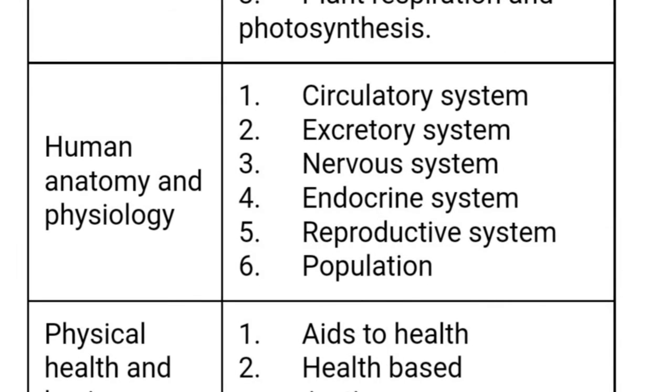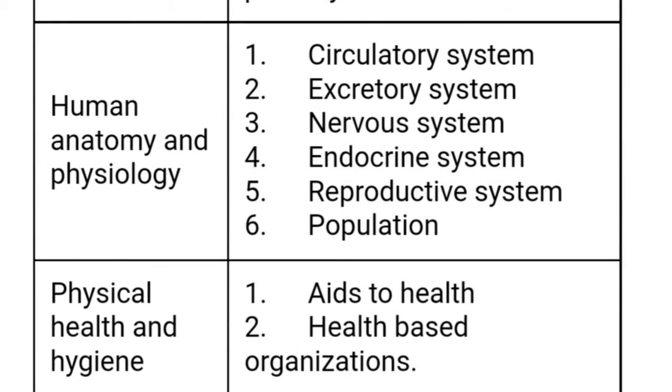In Human Anatomy and Physiology, we will deal with the circulatory system, excretory system, nervous system, endocrine system, reproductive system, and population.